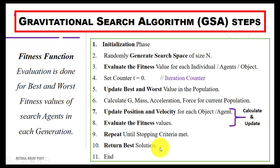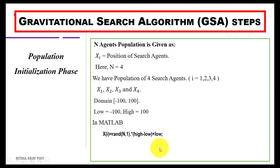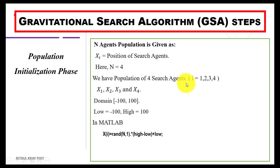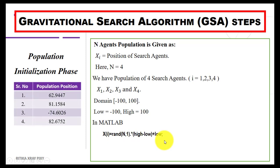Let's start with an example. Step one is the population initialization phase, where we initialize the population for n search agents. Here the position of each search agent is initialized; I will consider n=4, using just 4 objects. So we have a population of 4 search agents (i=1 to 4): x1, x2, x3, and x4, with domain from -100 to 100. In MATLAB you can write this equation to get the initial population randomly.